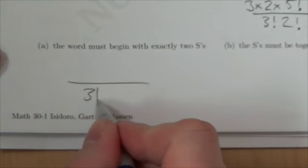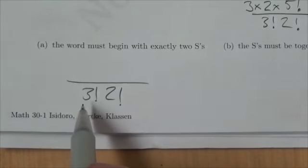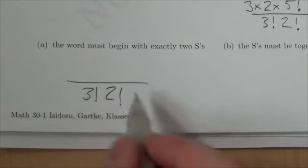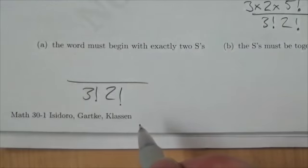I already know that there's repetition here. There's the three S's and the two C's. So whatever I do, I'm going to end up dividing by 3 factorial, 2 factorial.